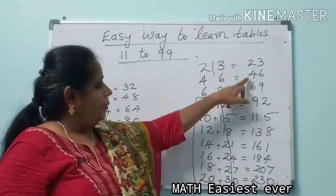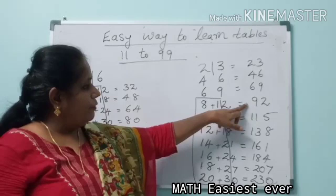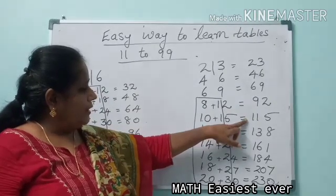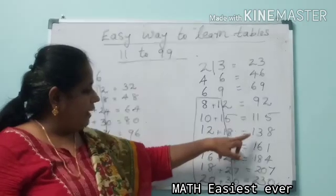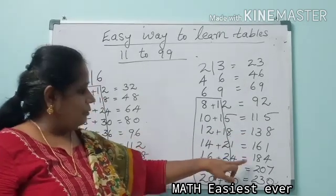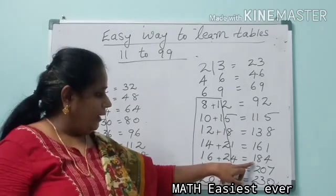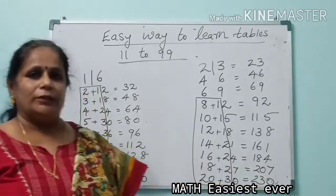So 23 ones are 23, 23 twos are 46, 23 threes are 69, 23 fours are 92, 23 fives are 115, 23 sixes are 138, 23 sevens are 161, 23 eights are 184, 23 nines are 207, and 23 tens are 230.